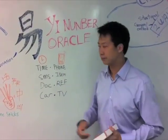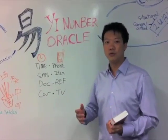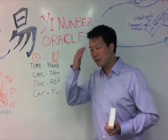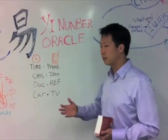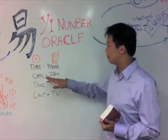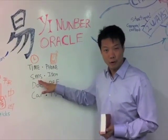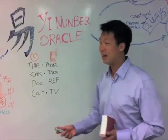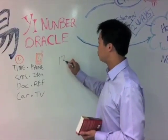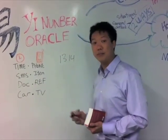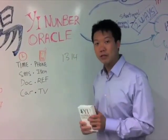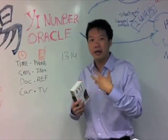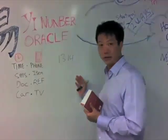Let's say you have a situation: you want to switch jobs but you're uncertain about the outcome if you change to a new organization. You think about it for a couple of days, and all of a sudden, while thinking about the question, an SMS arrives from your potential employer. The text on the phone has a time and comes with a number — let's say the number is 1314 and it's 1:14pm. This number is related to your question. Remember, every time you want to look for a number it must be randomly obtained. You cannot specifically choose a number for a reading; it has to come naturally to you.